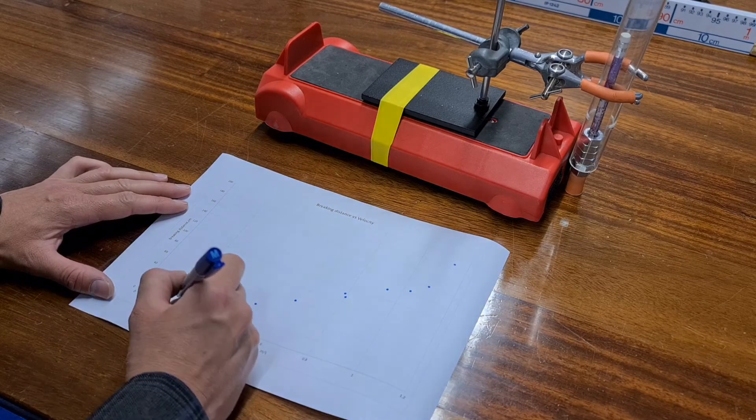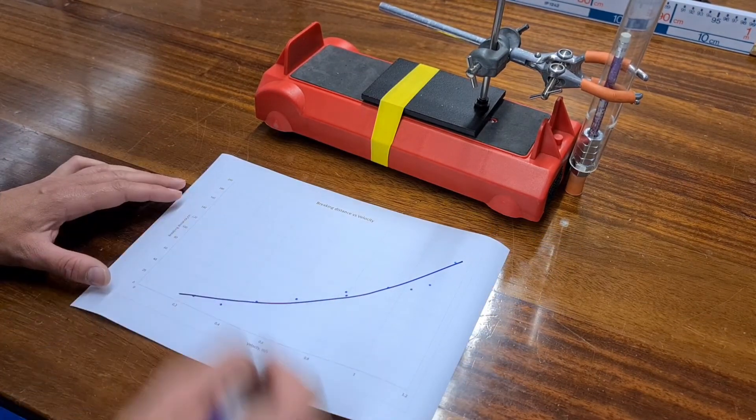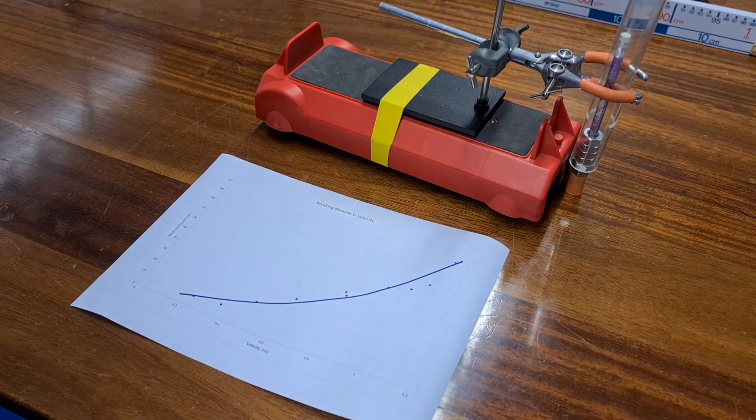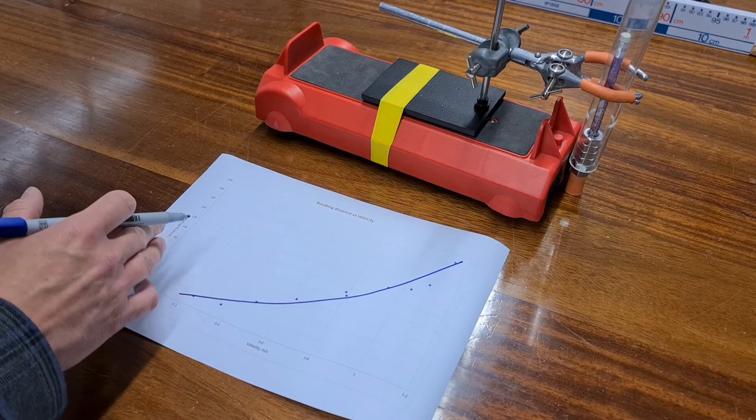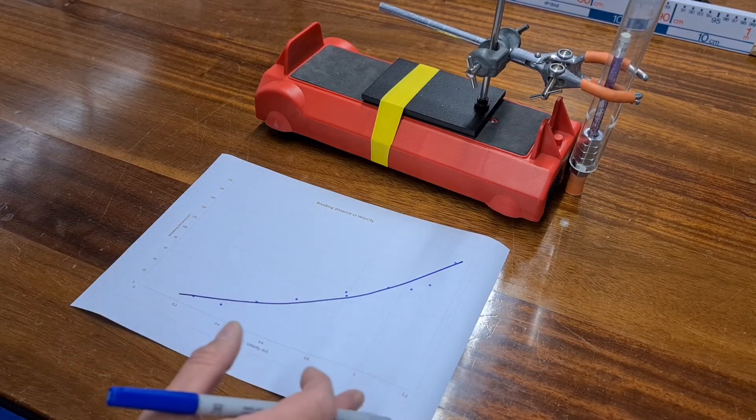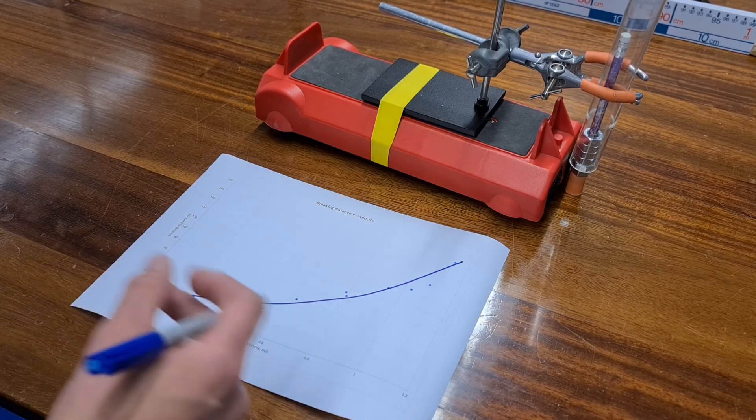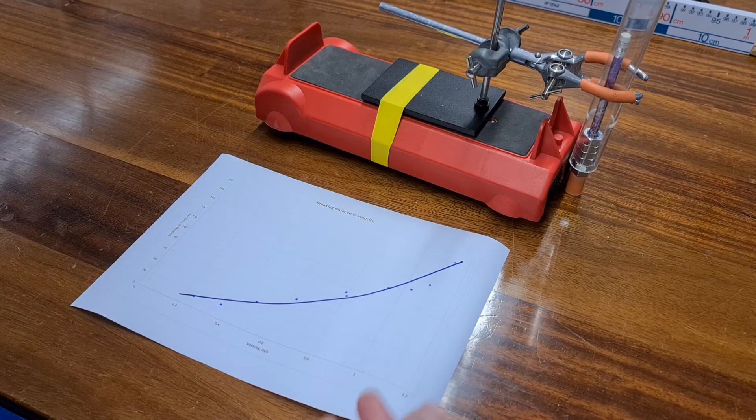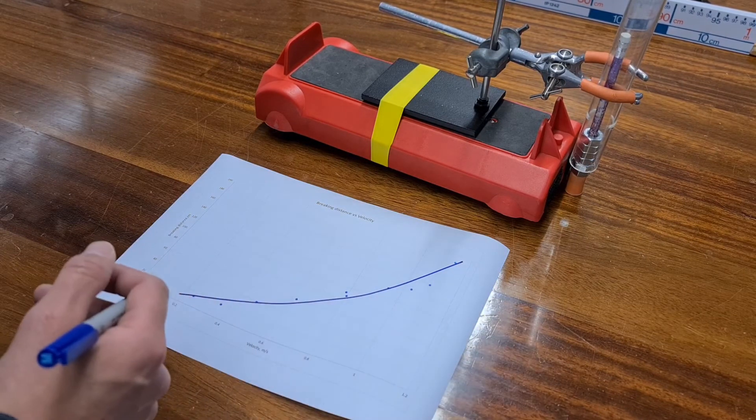And what you can see is that these are not linear. They're not directly proportional. If anything, it looks like the braking distance is proportional to the velocity squared. Why would that be? Why would a slight increase in velocity result in a significant increase in braking distance?